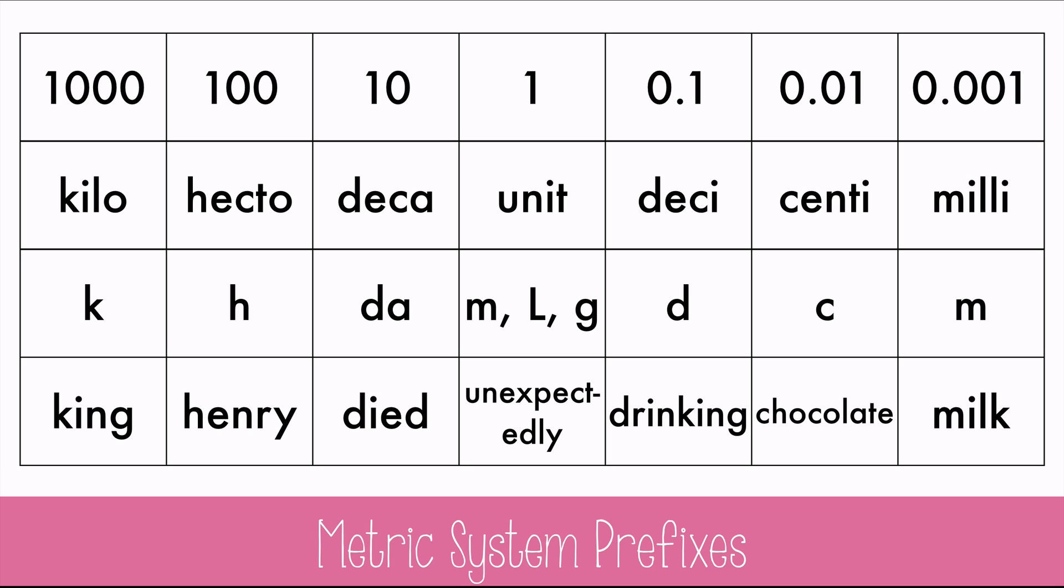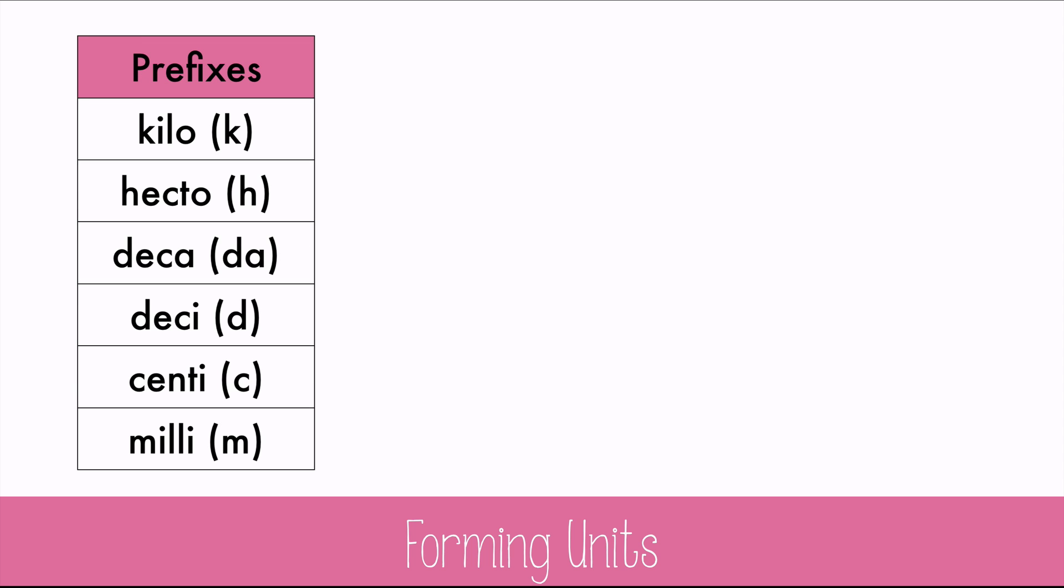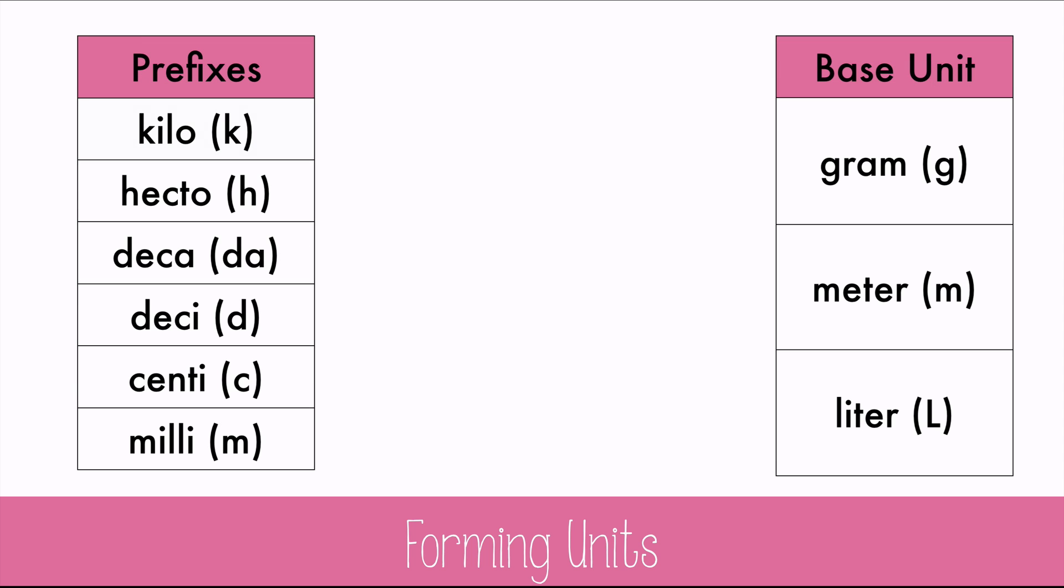Let's see how to use this information. You can take any prefix and attach it to any metric base unit. If you chose kilo and gram, you'd have a kilogram, with the symbol kg. Or you could choose deca and meter, and get a decameter, with the symbol DAM. Or you could choose milli and liter, and get milliliter, with the symbol mL. You could make any combination you need.